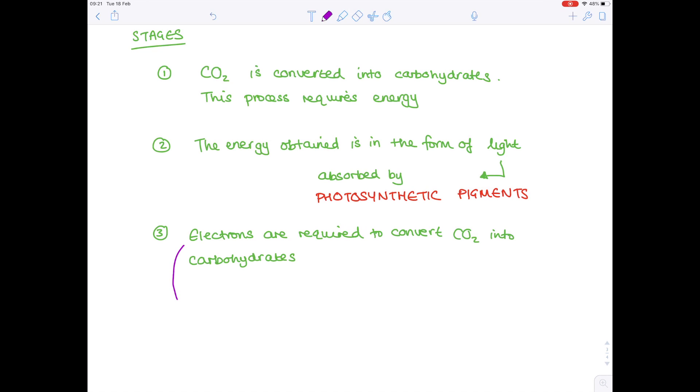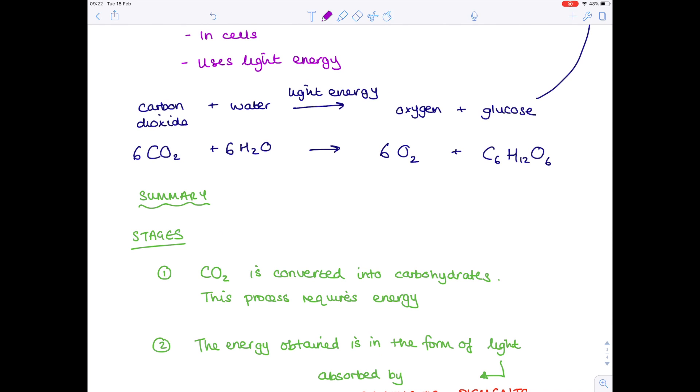So those electrons are obtained from a process known as photolysis. Well, what is this? Well, lysis means splitting. So actually what's going on here is the water molecules are being split and that actually produces those electrons needed. And notice that when you split the water molecules, oxygen is produced as the by-product, and that helps to explain our equation where we can see that oxygen is produced as a result of photosynthesis.